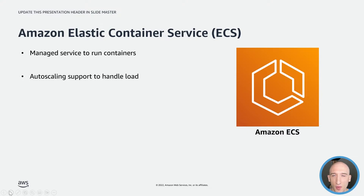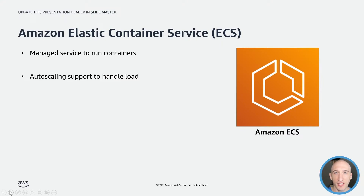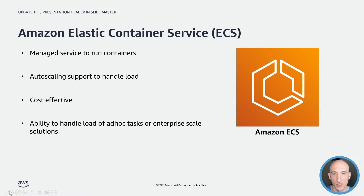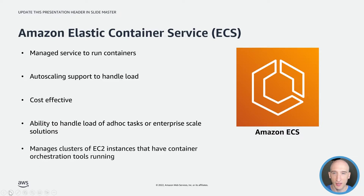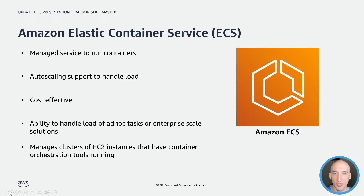ECS has a ton of great features available out of the box, but the most important one is the ability to autoscale depending on your load. You can use an Amazon ECS autoscaling group capacity provider with the managed scaling option turned on. What technically happens is that ECS creates two custom CloudWatch metrics and a target-tracking scaling policy that attaches to your autoscaling group. Amazon ECS then manages the scale-in and scale-out actions based on the load your tasks put on your cluster. ECS is also quite cost-effective, as containerizing applications requires smaller compute sizes than hosting applications in virtual machines, and ECS manages clusters of EC2 instances that have container orchestration tools running on them.